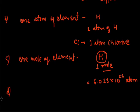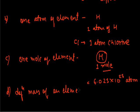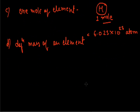The next significance is that a symbol represents a definite mass of an element — that is, its atomic mass. These are the main significances of the symbol of an element.